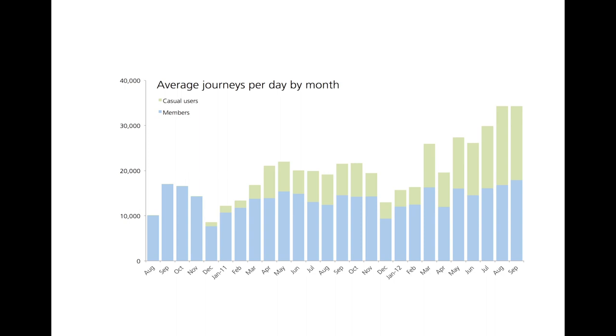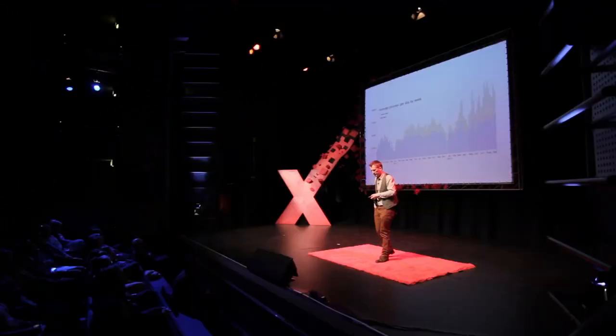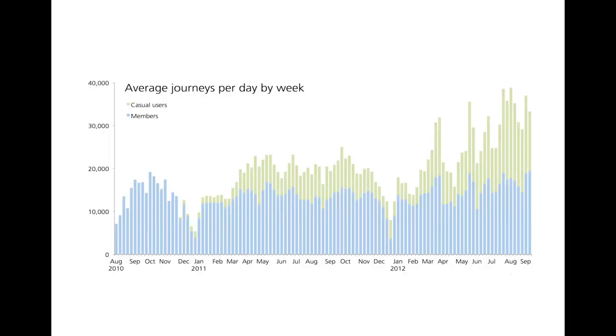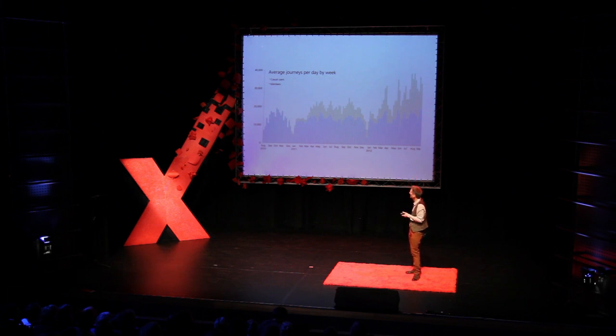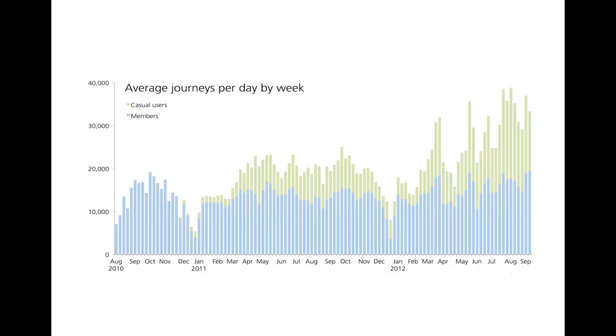If we look at the whole history of the scheme from August 2010 when it started up to last month, we see that those who registered — the blue bars — are reasonably static over time. The same number of journeys are being made throughout the last two years by members. But the green bars on top are increasing over time — more and more people are using the scheme with a credit card, and they're using it in a much more seasonal way, with more use in summer months than winter. We can also relate this to events such as Christmas dips, an Olympics effect, and even peaks from industrial action on the tube network.